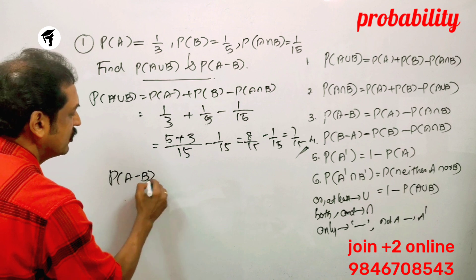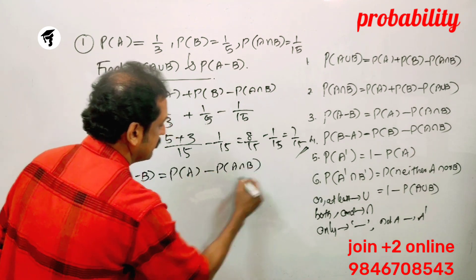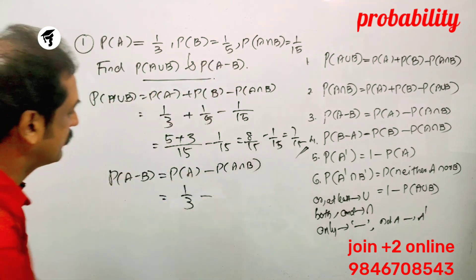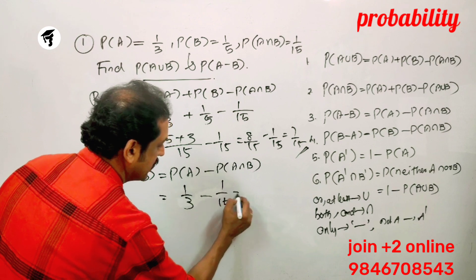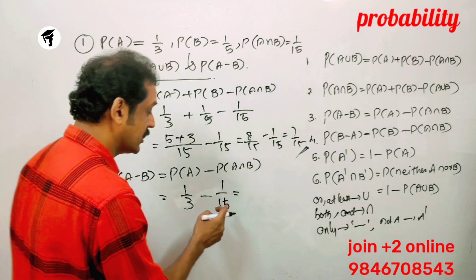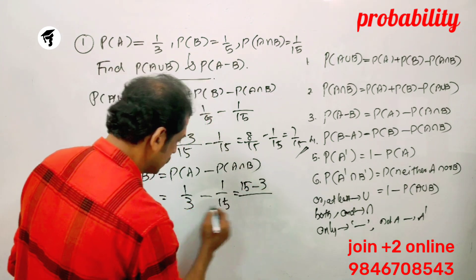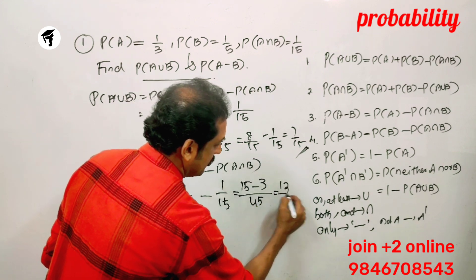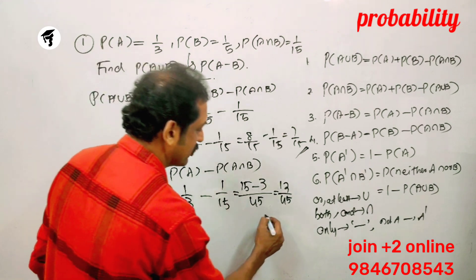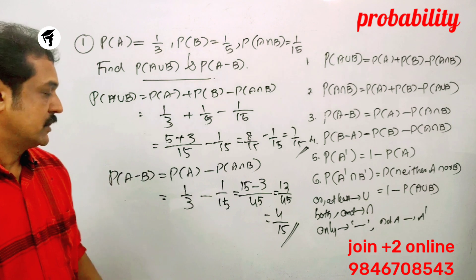P of A minus B equals P of A minus P of A intersection B. P of A is 1 by 3, minus P of A intersection B which is 1 by 15. Using LCM method: 5 by 15 minus 1 by 15 equals 4 by 15. The answer is 4 by 15.